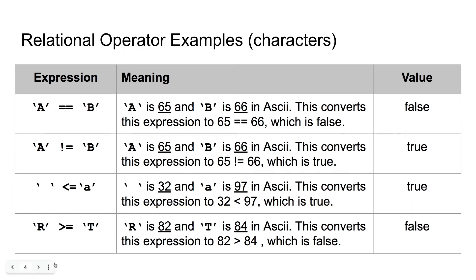We have the expression where capital R is greater than or equal to capital T. The capital R is 82 in ASCII and the capital T is 84 in ASCII. That converts the expression to 82 is greater than or equal to 84, which is false because 82 is less than 84. So this expression is false.